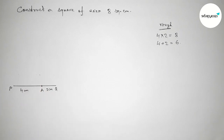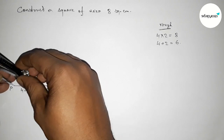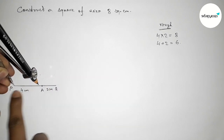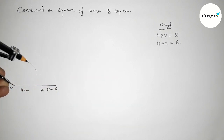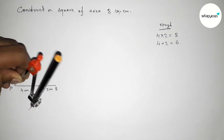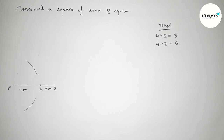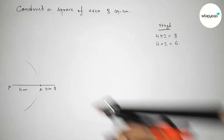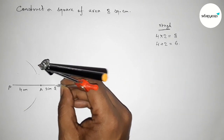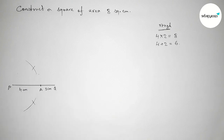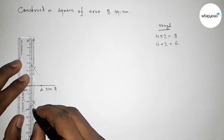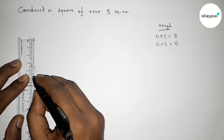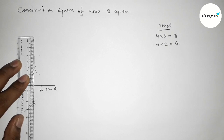Next, we have to bisect the line PQ with the help of compass. Putting the compass on point P, taking greater than half of PQ and drawing an arc here and here. Again with the same length, putting the compass on point Q and cutting arcs on both sides. Now joining this to bisect the line PQ at a point.